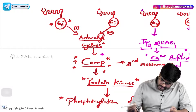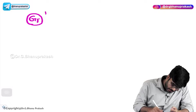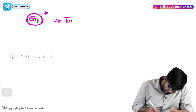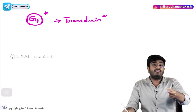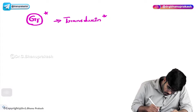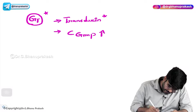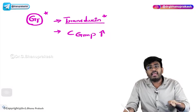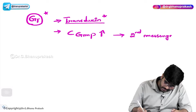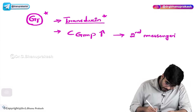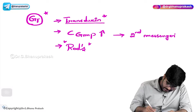Let's talk about one important point about GT — T for transducin. Whenever you activate the G protein coupled receptor in which the intracellular GT component is present, what will happen is that transducin will increase cGMP levels — cyclic GMP. The cGMP is also a secondary messenger and brings out the necessary changes inside the cell. An important point is that GT is present in the rod cells of the eyes.